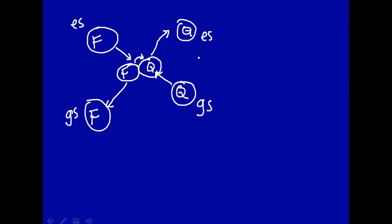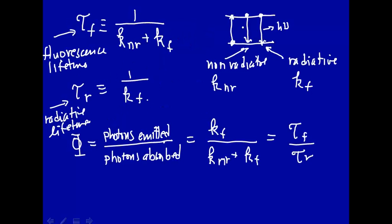This quencher in the excited state could then decay. Usually when you add a quencher, it goes to the ground state by some non-radiative process, though it could also emit a photon — in that case you have energy transfer. But in general, the quencher decays by a non-radiative process and does not emit a photon. This is called dynamic quenching, and it increases the rate constant for non-radiative decay, meaning no photon comes out — so the quantum yield decreases and the fluorescence lifetime also decreases.